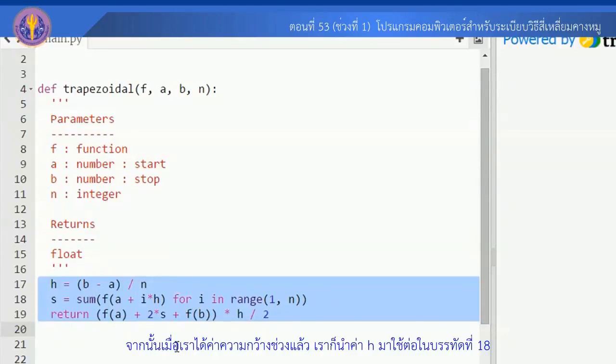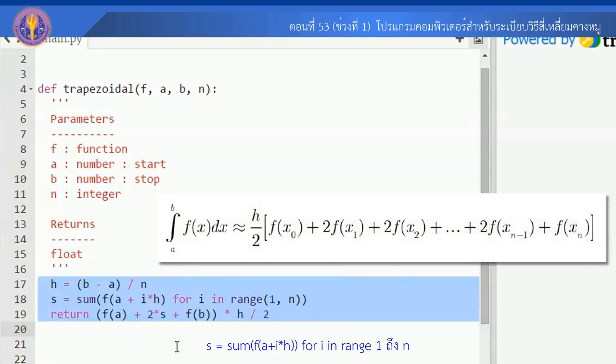บรรทัดที่ 18 s เท่ากับ sum f(a + i*h) for i in range(1, n) นี่จะเป็น loop ตามที่กำหนด